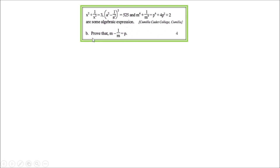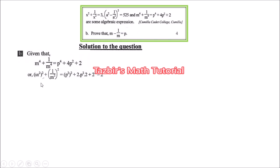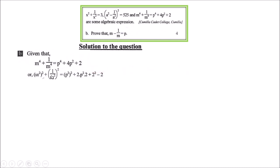You will understand the connection between the question and the stem. Now the solution: given m⁴ + 1/m⁴ = p⁴ + 4p² + 2. We can break the left side as (m²)² + (1/m²)². On the right side, write (p²)² + 4 as (p²)² + 2 × p² × 2 + 2² - 2. This is to form a recognizable formula — you will understand in the next line.